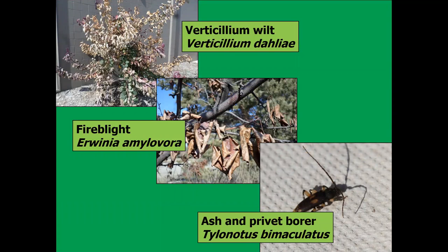I'm not too worried about what's occurring at the family level — we really don't have very many serious threats that cross families. We do have Verticillium, which can affect smoke trees, elms, ash, and maple. When we look at problems that cross genera within a family, we certainly have fire blight with a number of Rosaceae hosts, and even the ash and privet borer affects a number of genera. But these are fairly limited, so I'm not too worried at the family level. I am very concerned about what's happening at the genus level.